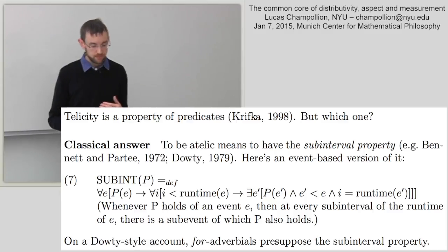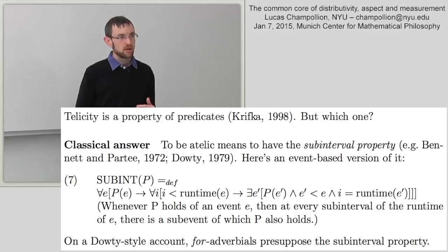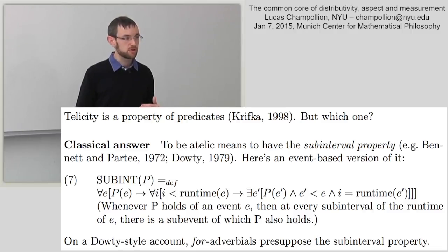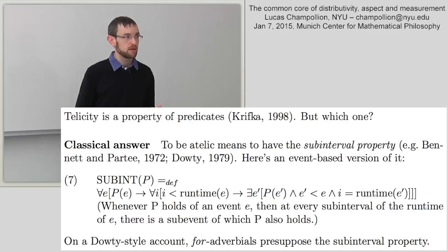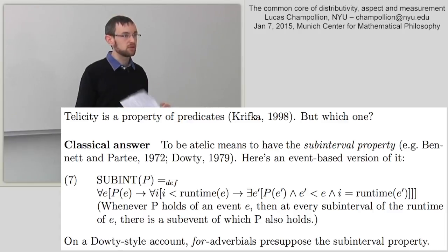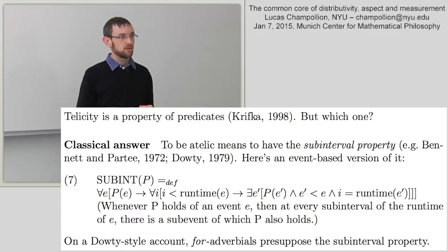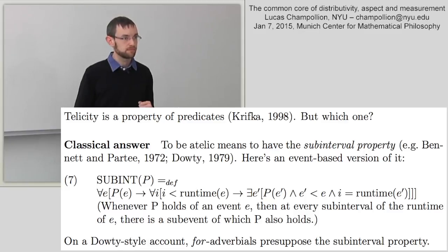I will show that the sub-interval property fails to accurately model atelicity — it only models it as an idealization — but it can be modified to avoid these problems. Once generalized, we arrive at a slightly more complicated property I'll call stratified reference, which generalizes the telic-atelic contrast. From this concept we'll derive the restriction on measure functions, and then I'll end by discussing distributivity. In a nutshell: stratified reference is distributivity, stratified reference is atelicity, and stratified reference is monotonicity.